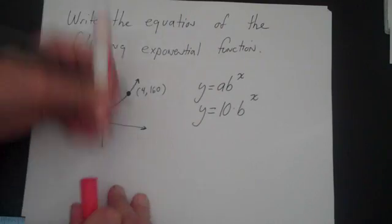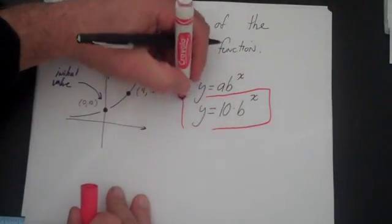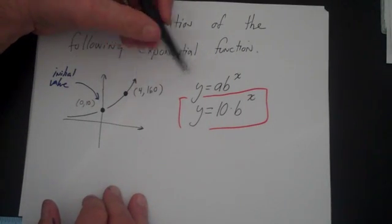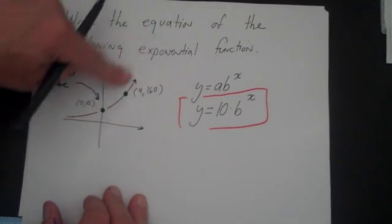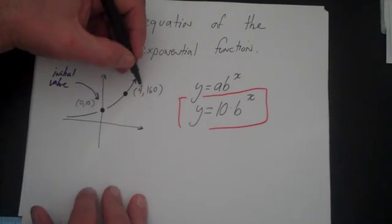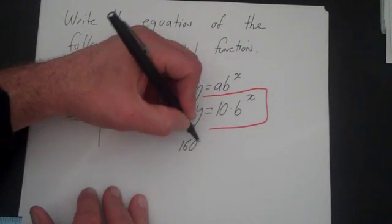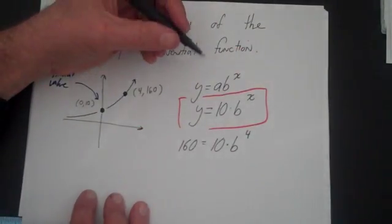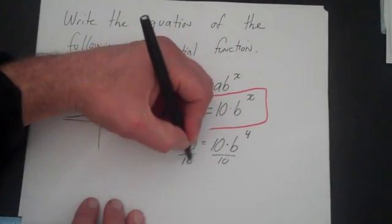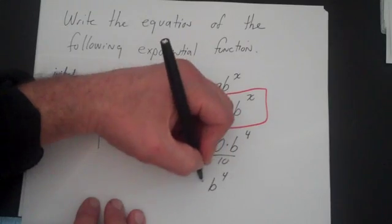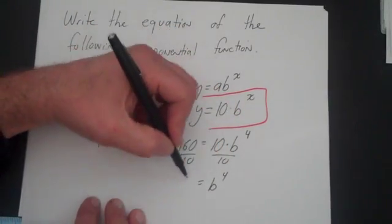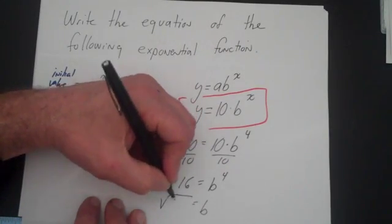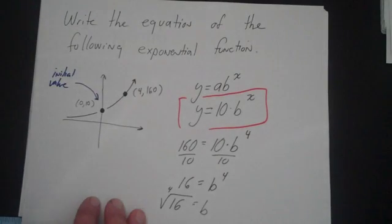And there we're almost done, right? If we look at this problem right here, we have everything we need except for b. We're going to temporarily plug in a value for x and y. We can use any point along this graph. In this case, we have 1 identified, so we plug that in. So we go 160 is equal to 10 times b to the 4. I'm going to solve that for b. So I divide by 10 and I get b to the 4 is equal to 16. So I have b is equal to the 4th root of 16.